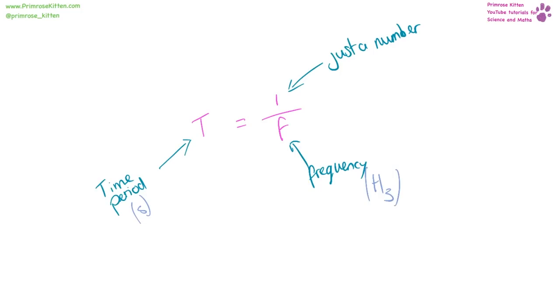If we want to measure the time period for something, that is one over the frequency. Time is measured in seconds and frequency is measured in hertz. There is a capital H and a lower case Z. As I said, do not write lower case both letters or uppercase both letters because they are wrong.